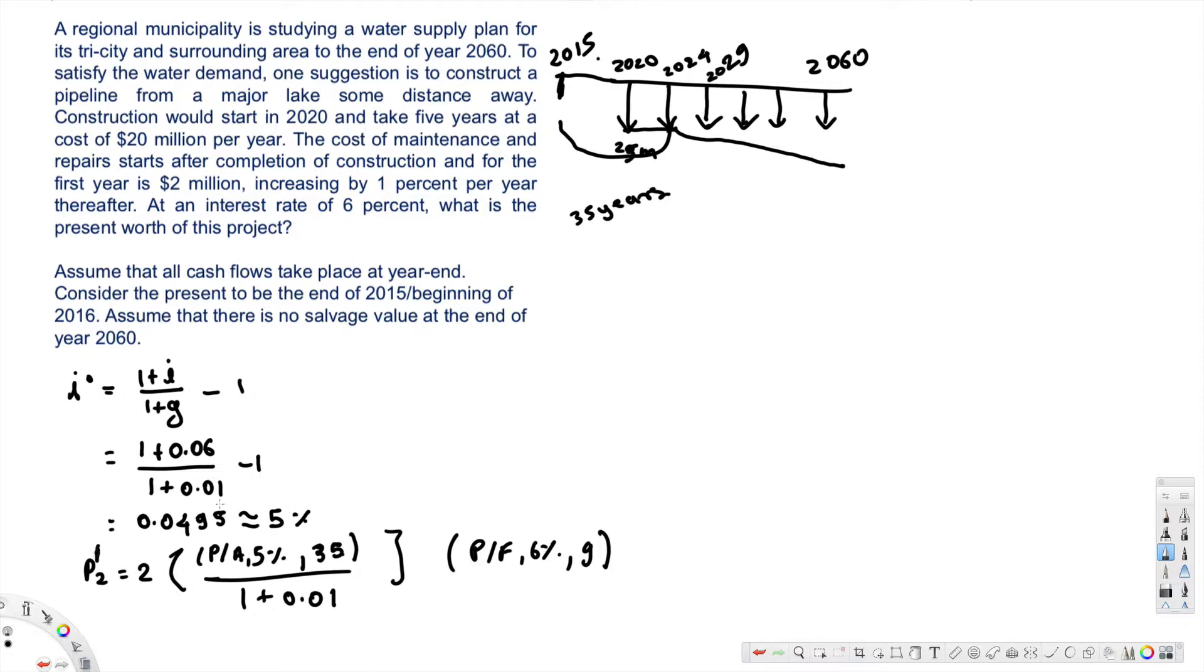I forgot to write P2, this is P2, and the P2 prime is going to be the next thing. P2 prime, so here this is the pipe will be scrapped at 2060, no need to be repaired at the end of 2060.